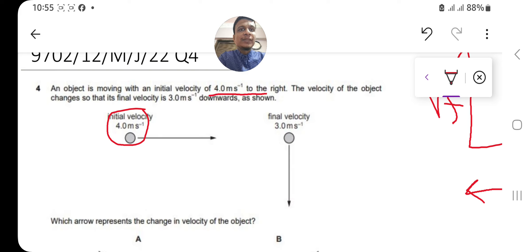changes. The final velocity of the object is downward. So just remember: 4 m/s to the right initially, and 3 m/s downward as final velocity. Right now they are asking for the change in velocity of the object.